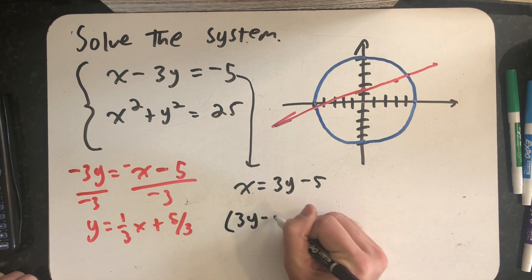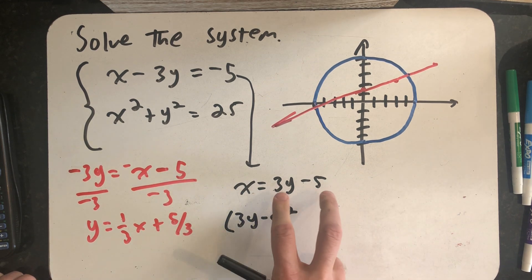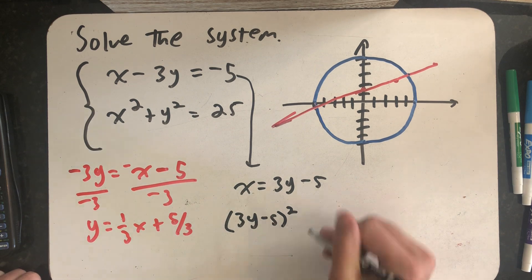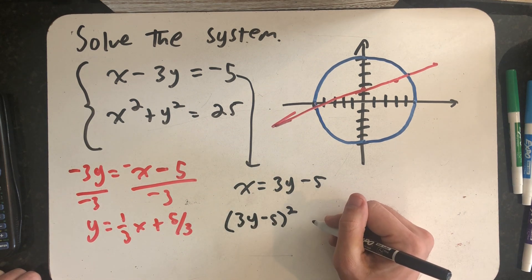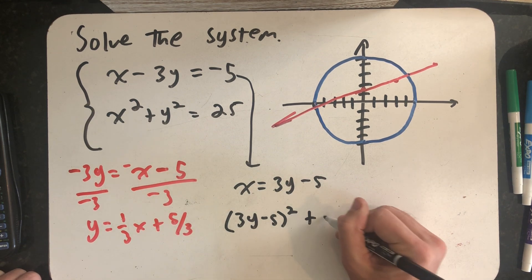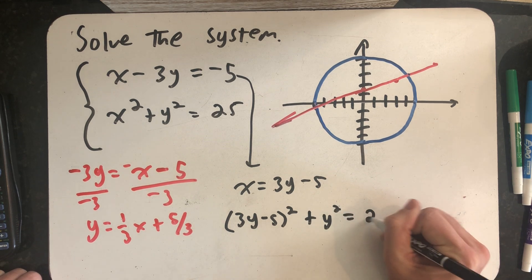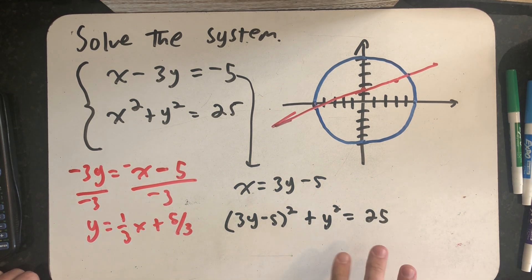All right, so (3y minus 5)² plus y² equals 25, because 3y minus 5 goes in for x. So now I have a nice happy equation in one variable, only have y's to deal with here.